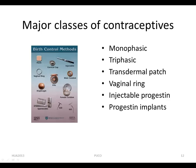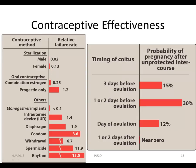There are different classes of contraceptives: monophasic, triphasic, and transdermal patches, vaginal ring, injectable progestin, progestin implants, and progestin intrauterine device.